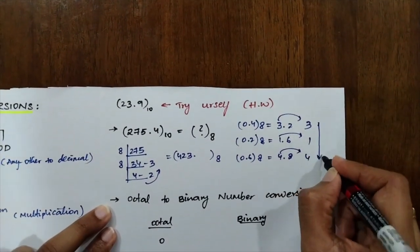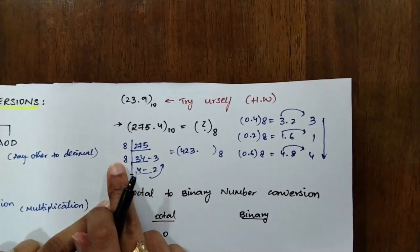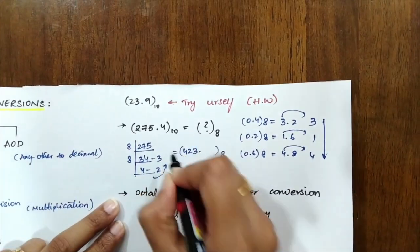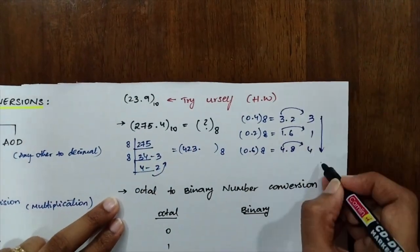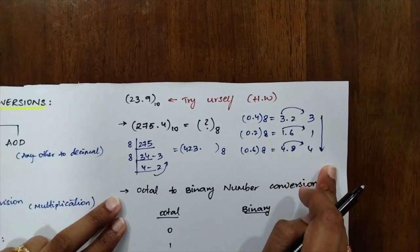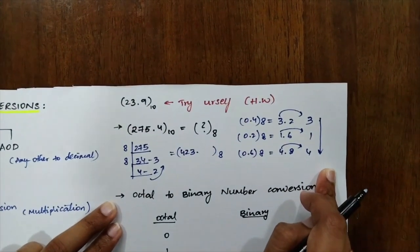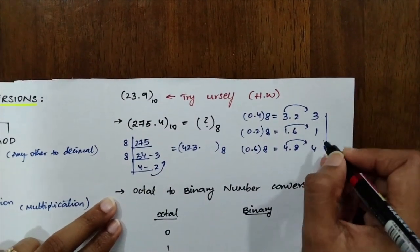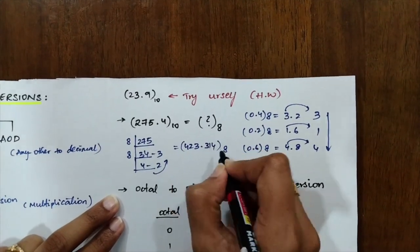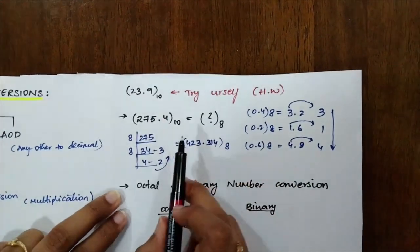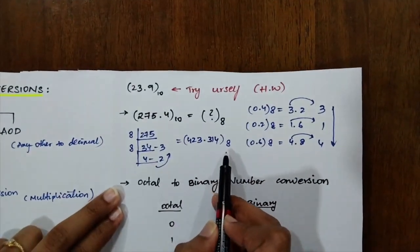So, again, going from the upward to the downward direction. Remember, when you are going to divide, you will be going from the downward direction. When you multiply, you will be coming from upward to the downward direction. Don't get confused between both of them, or else your answer will be completely wrong. So, the values are 314. You can just write it here. That's it. The answer for this one is 423.314 in base 8.